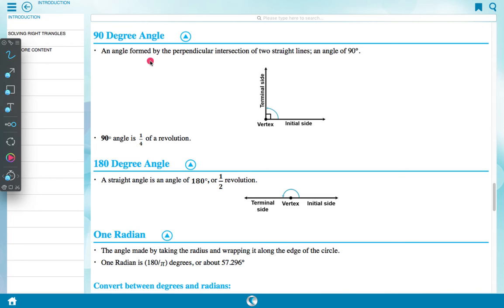90 degree angle: an angle formed by the perpendicular intersection of two straight lines, an angle of 90 degrees. Here terminal line, initial line both intersecting at vertex and forming 90 degrees. 90 degree angle is 1 by 4 of a revolution. 180 degree angle: a straight line is an angle of 180 degrees or half revolution. Here vertex, initial line, terminal line both becoming single straight line. One radian: angle made by taking radius and wrapping it along the arc of the circle. One radian is 180 upon pi degrees or about 57.296 degrees.